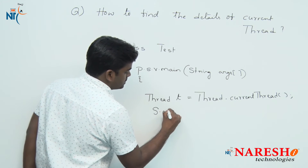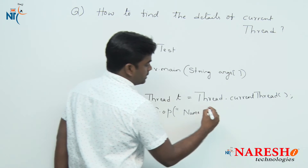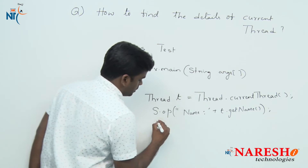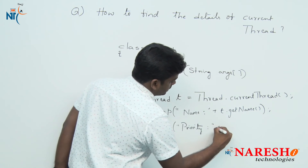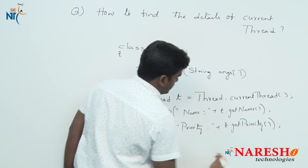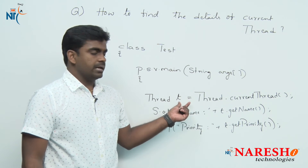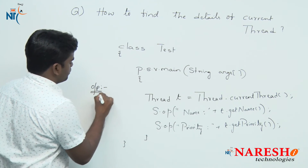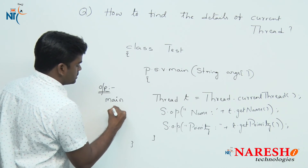If you want to print the name of the main thread, once the thread object is ready, call the getter method getName() and it will return the name of the thread. Next, the priority of the main thread can also be printed using getPriority(). Using getName() and getPriority() we can find out what is the name and the priority of main. The output will be 'main' — the main thread name is 'main' — and the default priority of all threads is 5.